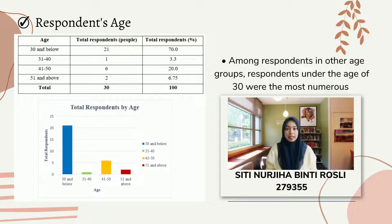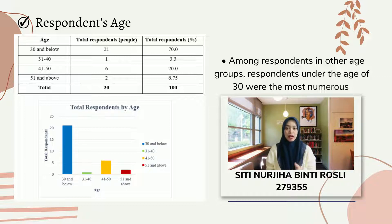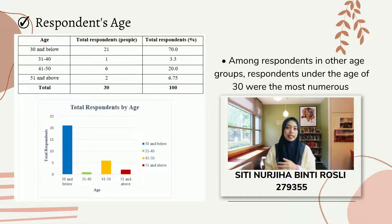The age of respondents is shown in the next figure. There are 21 total respondents in the 30-and-below age group, only 1 respondent aged 31 to 40, 6 respondents in the 41-to-50 age group, and just 2 respondents aged 51 and above. We can conclude that respondents under the age of 31 were the most numerous. This is influenced by the personal factor of age — as people become older, their spending on non-essential items decreases compared to young people.